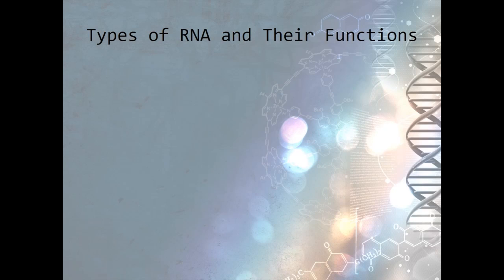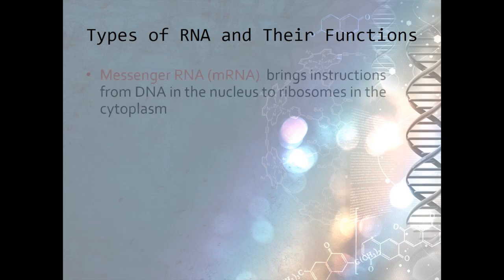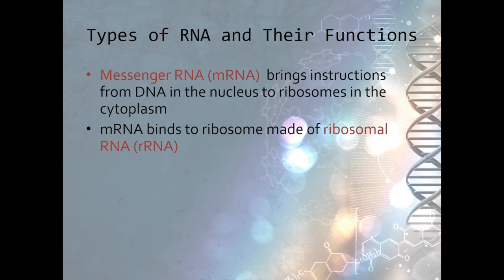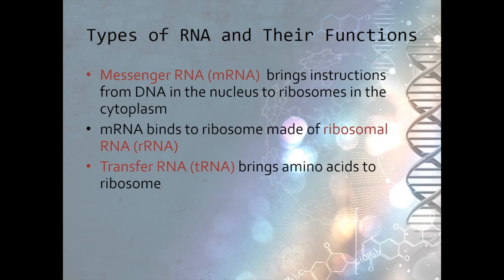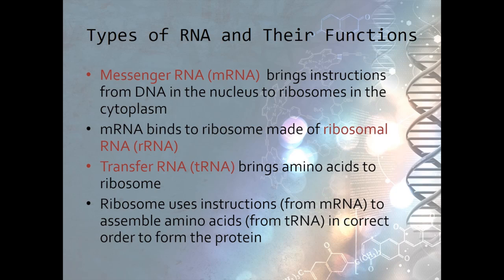There are three different types of RNA, and each performs a specific function. Messenger RNA, or mRNA, takes the instructions from the DNA in the nucleus to the ribosomes in the cytoplasm. The ribosomes are made of ribosomal RNA, or rRNA. The mRNA attaches to the ribosome and gives out the instructions it's carried from the DNA for assembling the amino acids. Transfer RNA, or tRNA, brings the amino acids to the ribosome. The ribosome uses the instructions brought by the mRNA to assemble the amino acids brought by the tRNA to form the protein. Let's look at what happens during each step of this process.